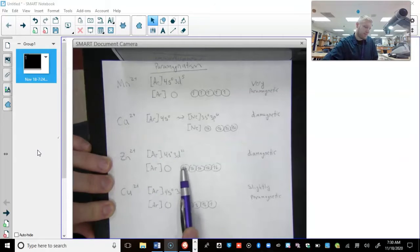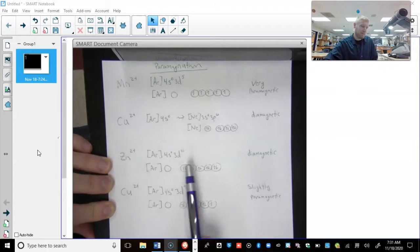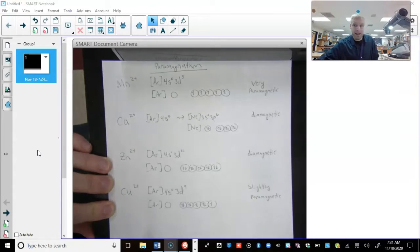Zinc 2+. Take away the two outer electrons, and you've got a full 3d orbital. No partially filled, so this is going to be very diamagnetic. Nothing's going to impact it.